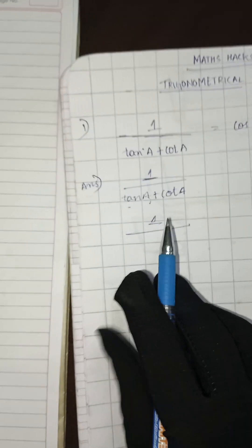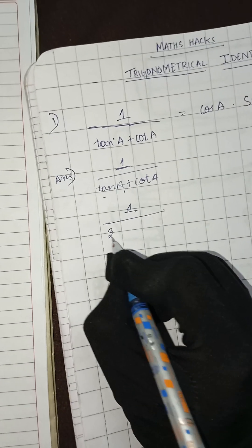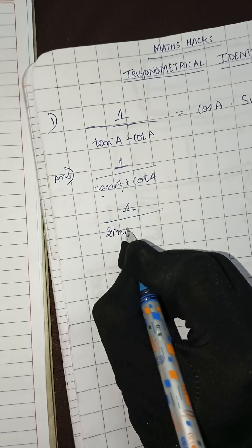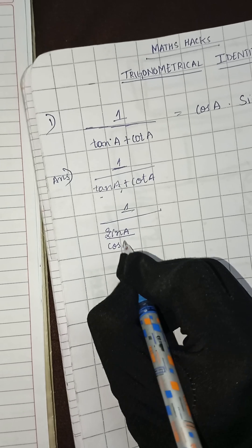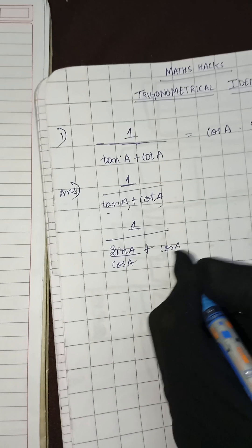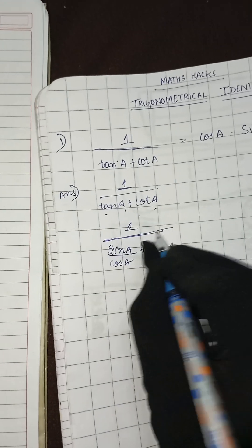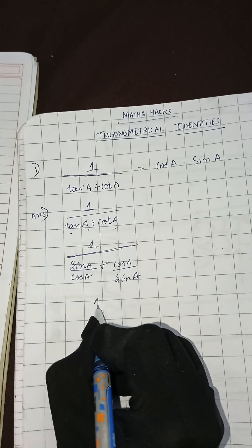The formula here — here it's theta but in the question it's A — so tan A equals sine A by cos A. We'll write sine A by cos A in place of tan A. For cot A, the formula is cot theta equals cos theta by sine theta, so we write cos A by sine A. We applied the formula here.